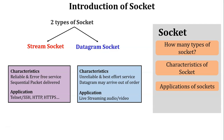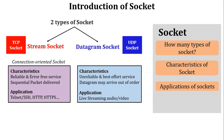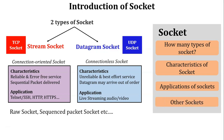Stream socket is associated with TCP, also known as the connection-oriented socket. Datagram socket is associated with UDP protocol, also known as the connectionless socket. Other socket types are raw socket and sequenced packet socket. Raw socket is associated with UDP or datagram socket, and sequenced packet socket is associated with TCP or stream socket.